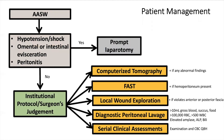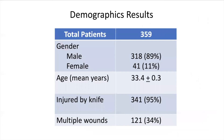Data such as demographics, injury details, length of stay, and complications were collected prospectively. Of the total 359 patients, 89% were male, 95% had injuries by knives, and 34% had multiple stab wounds.